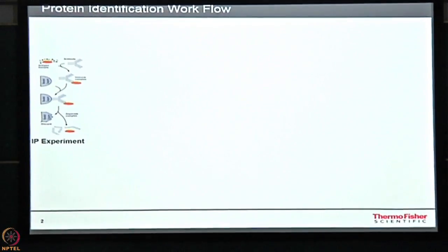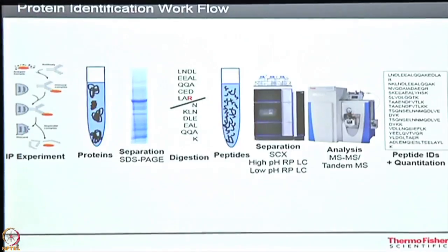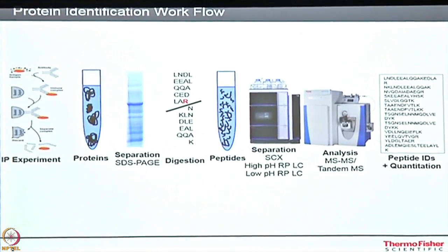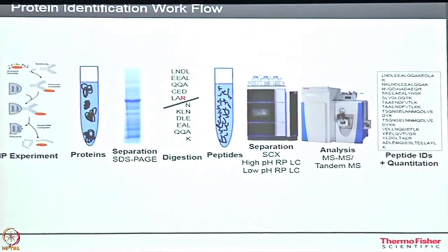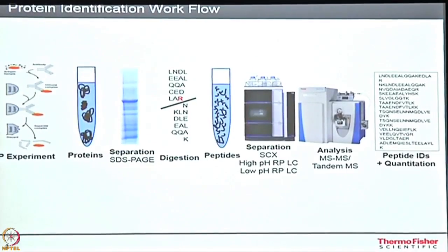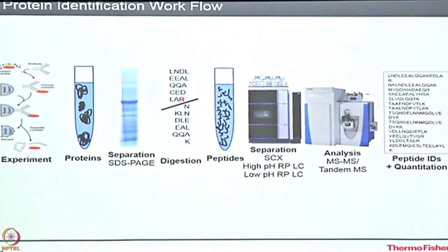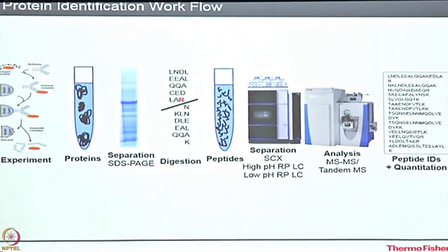You have precipitated the protein and now have the protein. The next step: either you run an SDS-PAGE, or in solution you can digest the protein with a protease — for example, trypsin, which cuts after arginine and lysine — making a peptide mixture. That peptide mixture is fractionated through LC and introduced to the mass spectrometer, where you get the masses of those peptides. You then search against a database using search tools to identify those peptides.